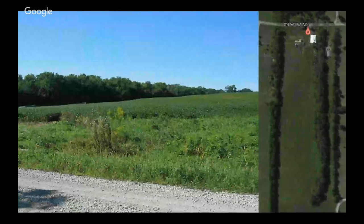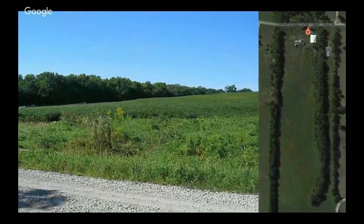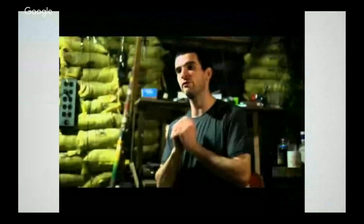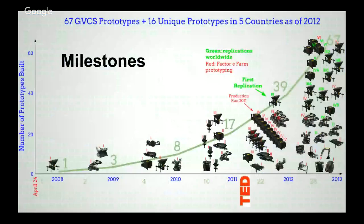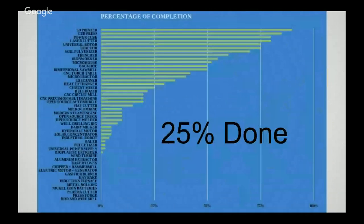I moved out to some land in the middle of Missouri and began to build. As of 2011, we had eight different prototypes: the tractor, brick press, power cubes, torch table, iron worker, micro truck. Right now, we're at about 120 — though this is a little old, up to 2013 — but we've so far built about 18 unique prototypes. There are four that are recommended for replication like the brick press, the power cube, the soil pulverizer, and the tractor. But I would say we're only about 25% done.